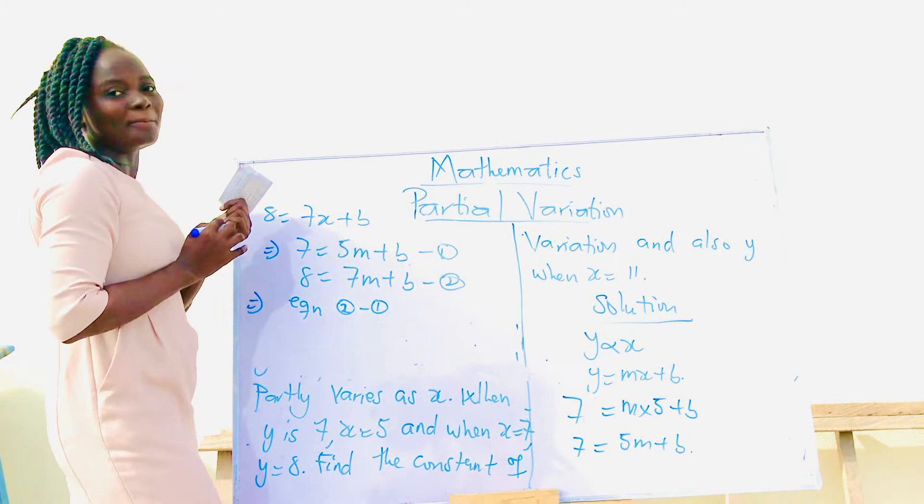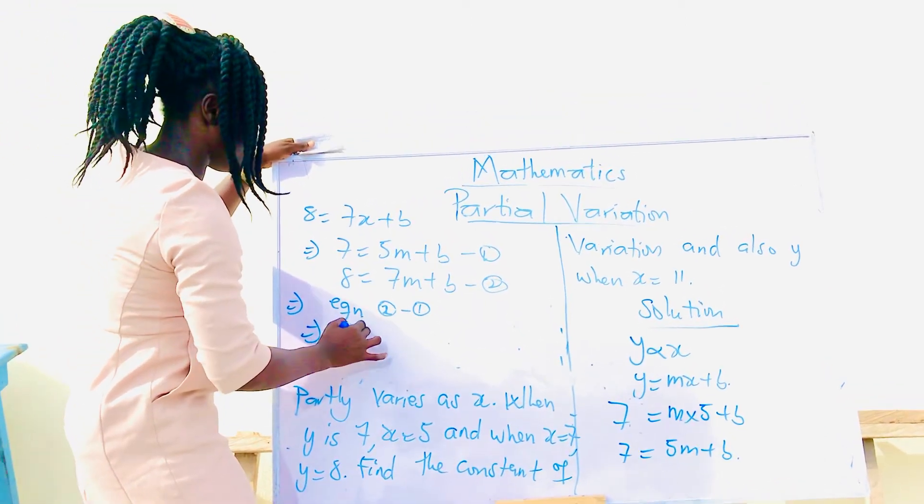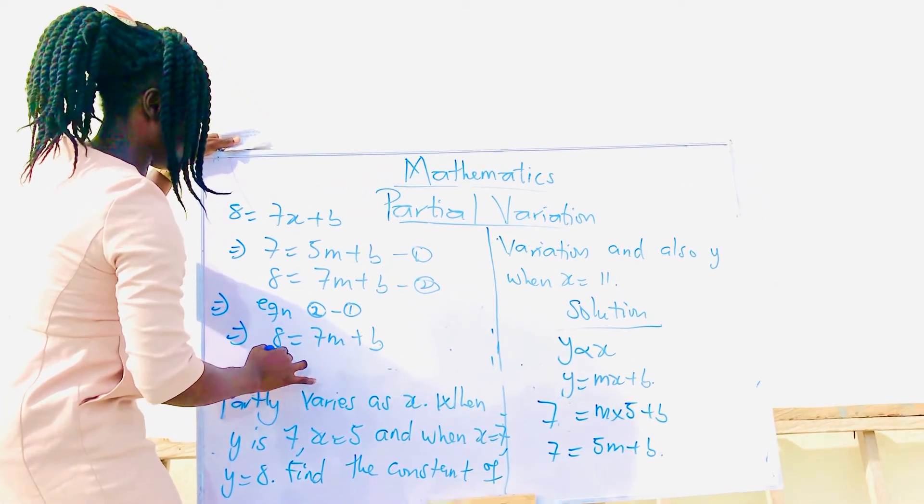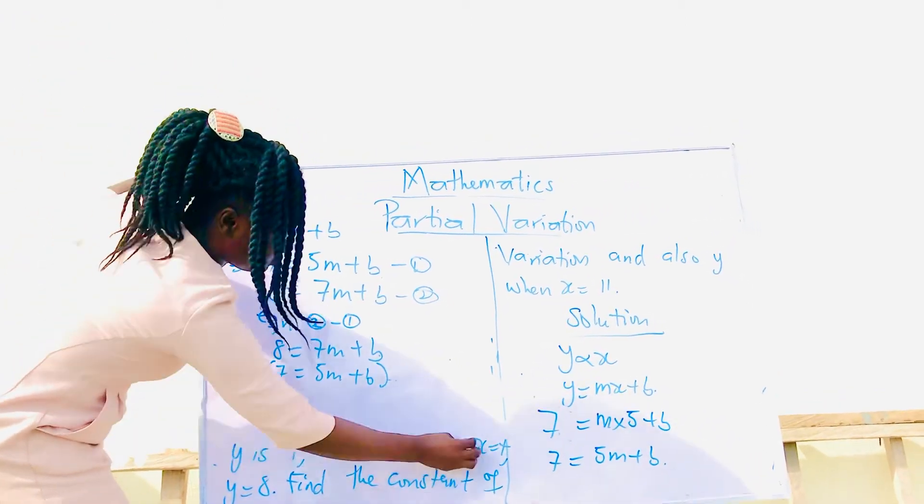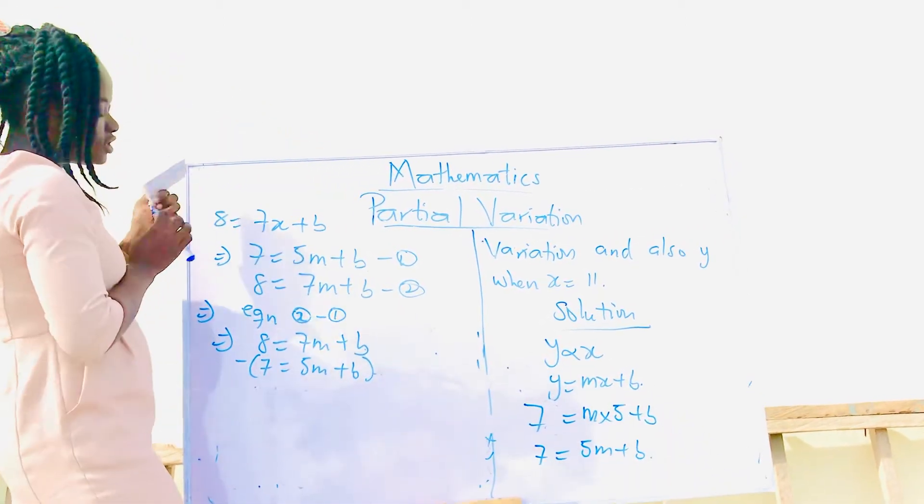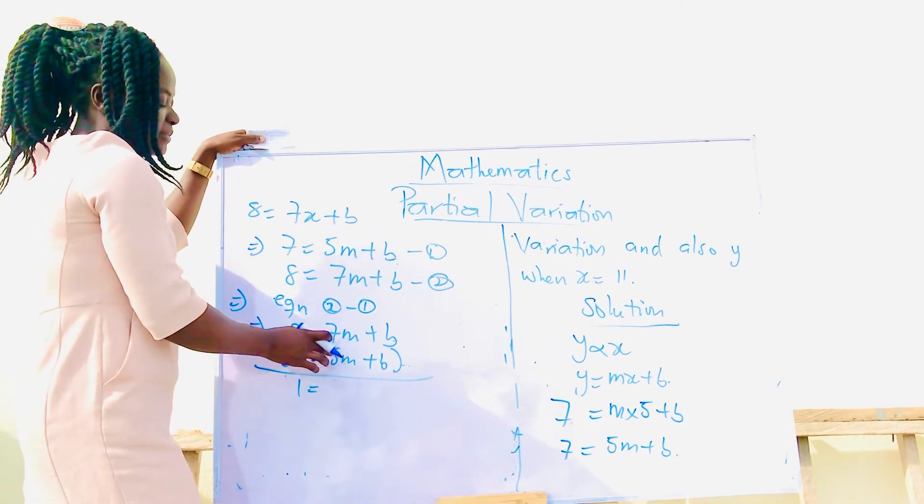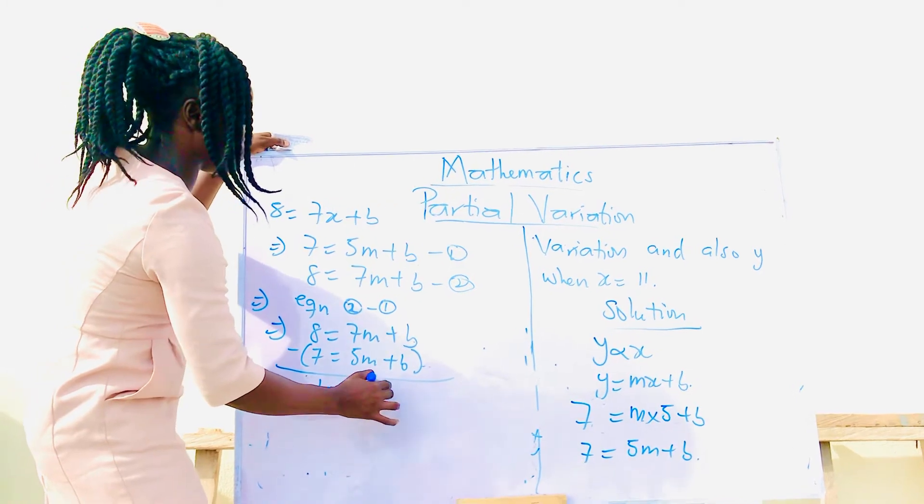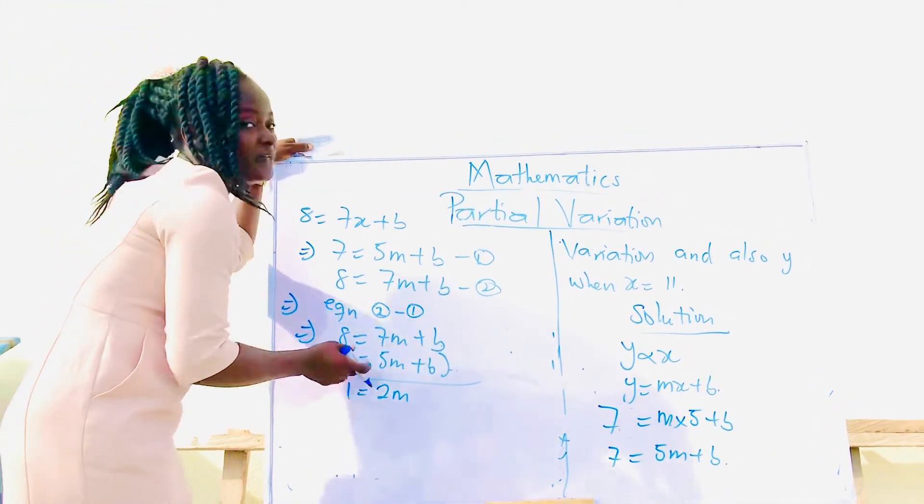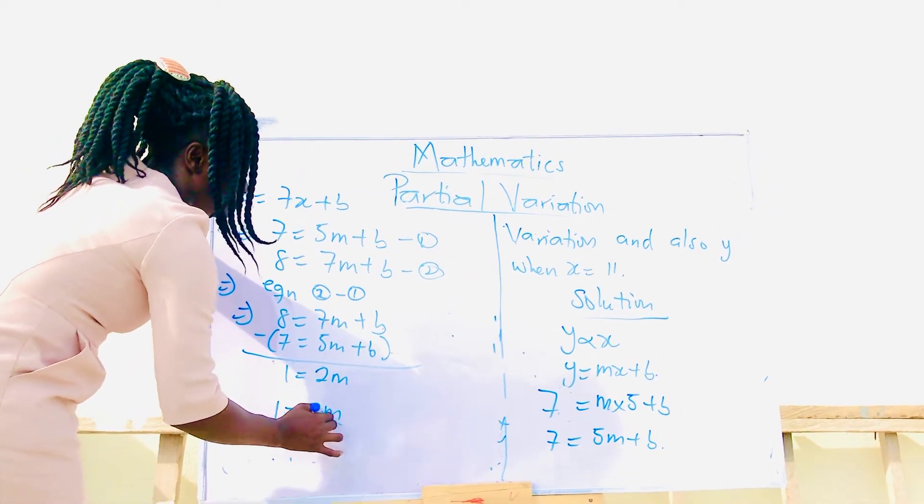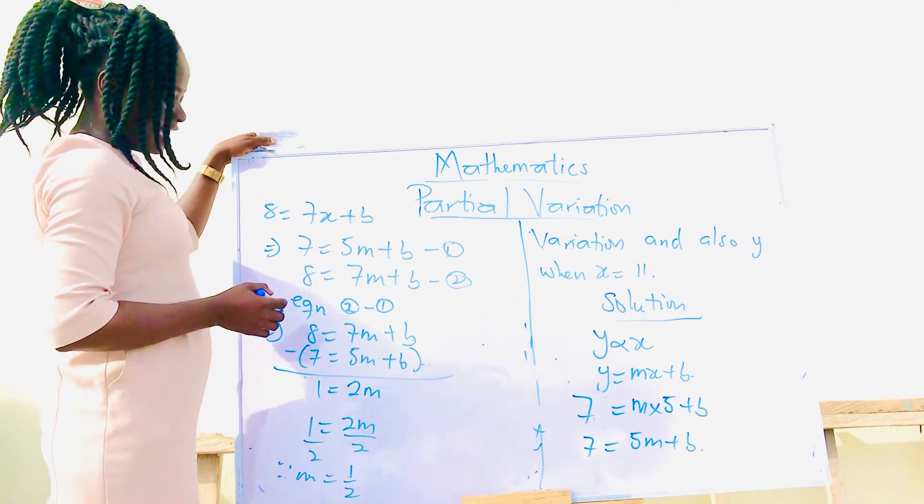Subtracting these two equations, it becomes 8 minus 7 is 1. 1 equals 7 minus 5 is 2, so 2m. We have to look for m. We divide both sides by 2. Therefore, m is giving us 1 over 2.